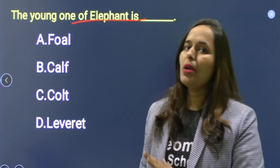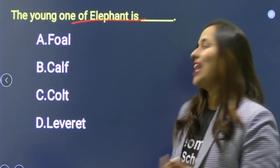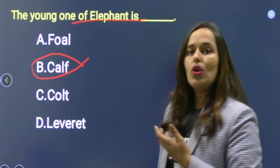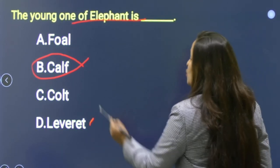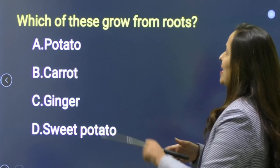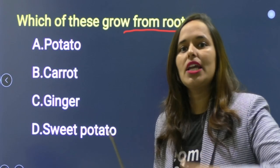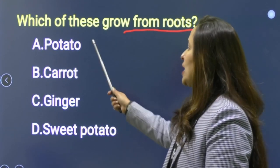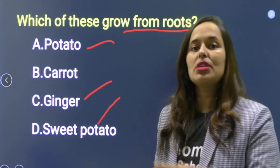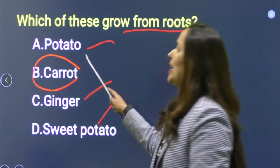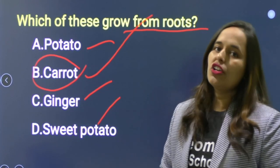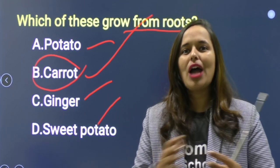Next: The young one of elephant is called? Elephant का baby — जैसे horse के female young one को filly, zebra का colt, whale का baby leverage (leveret), hare के baby को leverette कहते हैं। Next: Which of these grows from roots? Options: potato, carrot, ginger, sweet potato. Potato, ginger, sweet potato stems हैं। Carrot और radish roots हैं — carrot roots से grow होती है। Correct answer is carrot.